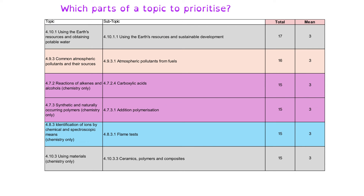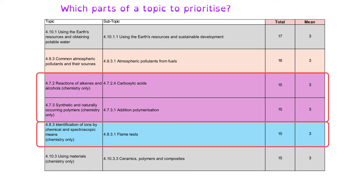Here are more subtopics worth on average three marks per paper. Whilst that doesn't seem like much, if there are 60 subtopics to choose from, it helps to know which organic topic to prioritize — and it looks like addition polymerization and carboxylic acids come up the most. For the analysis topic, after chromatography, flame tests come up with the greatest frequency.